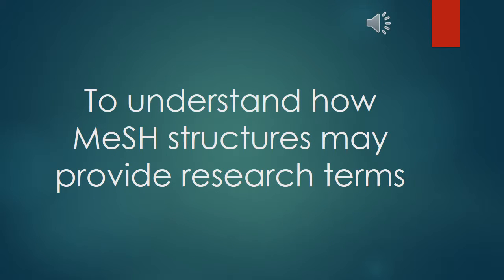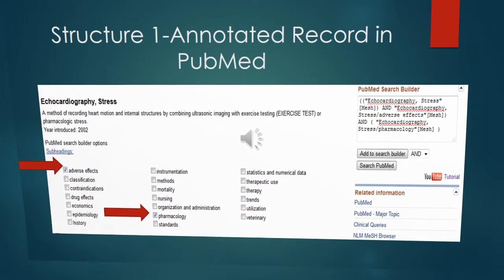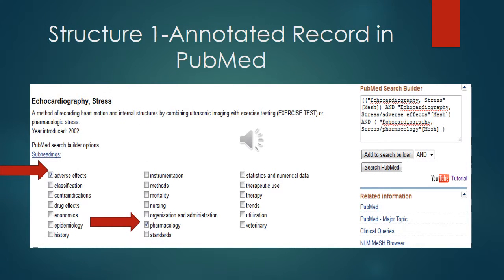To understand how MeSH structures may provide research terms, let's look at the two structures available in PubMed and the National Library of Medicine's MeSH browser. We are looking at an example of the first structure — the annotated alphabetical listing for 'echocardiography stress' in the PubMed search builder.